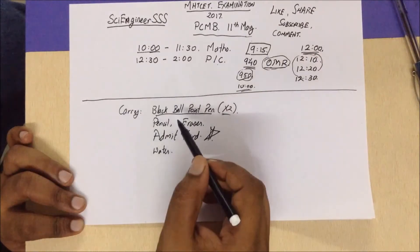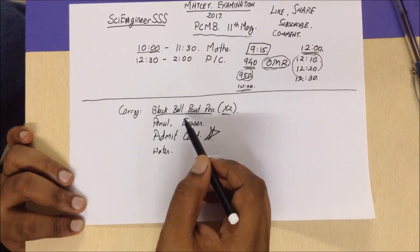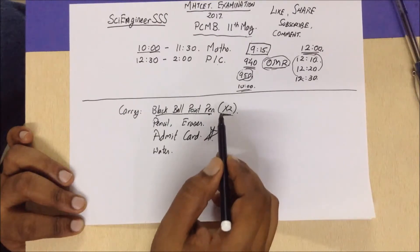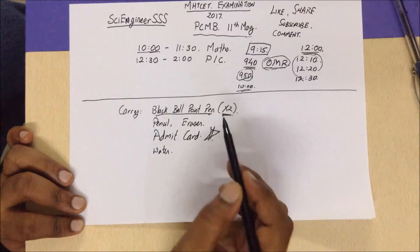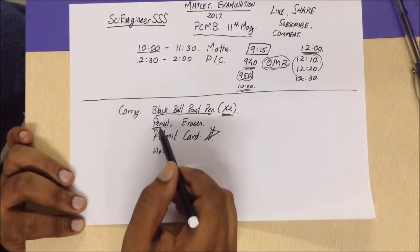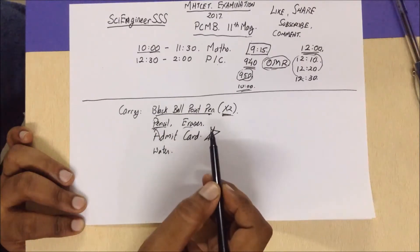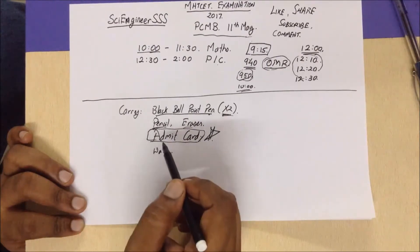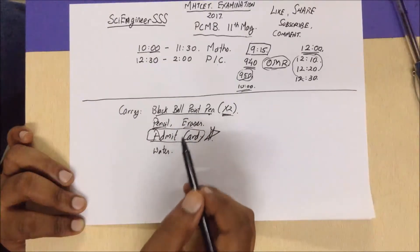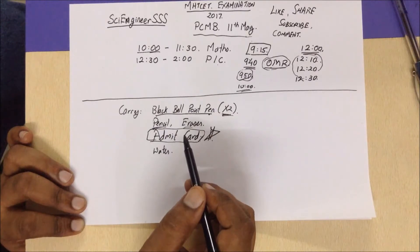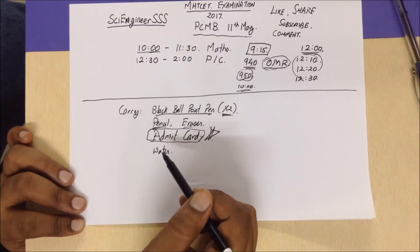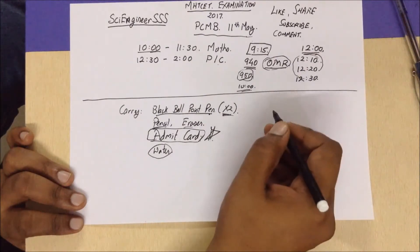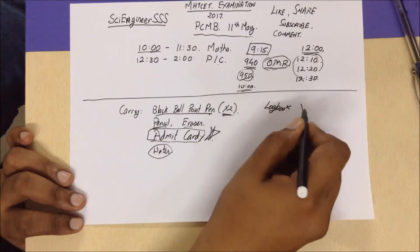Now let's look at what you should carry during your examination. You should carry a black ballpoint pen — please keep at least two. Keep these two for yourself and have an extra for others. Just in case, you can also have pencils and erasers. Most importantly, carry your admit card — without it you will not be able to attend the exam. If you have any medication, carry that along too.